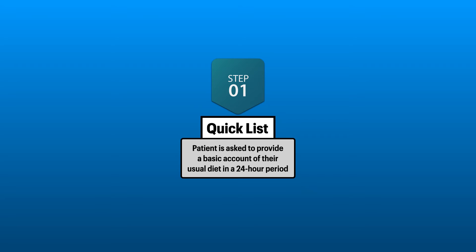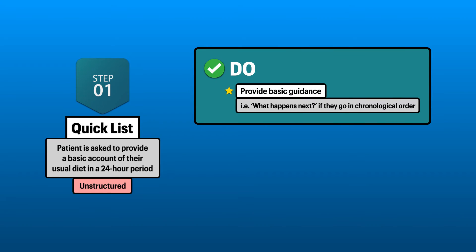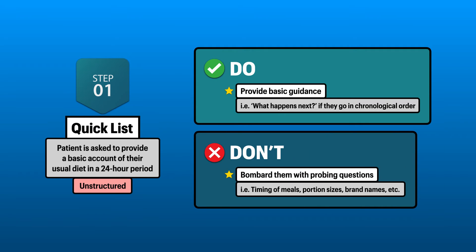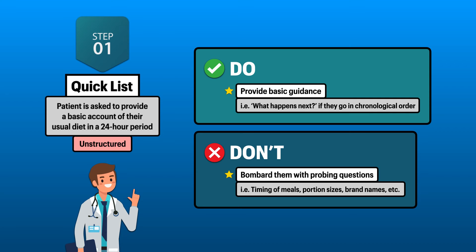In the first step, the patient is asked to provide a basic account of their usual diet in a 24-hour period. This part should be as unstructured as possible. You can provide some guidance like what happens next if they go in chronological order. However, you don't want to bombard them with probing questions about the timing of meals, portion sizes, preparation methods, brand names, or items they may have forgotten. All of that happens later on, so try your best to remain calm.